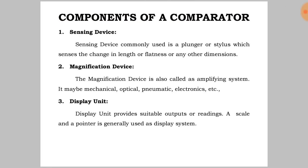The sensing device commonly used is a plunger or stylus which senses the change in length, flatness, or any other dimensions. The magnification device is also called an amplifying system. It may be mechanical, optical, pneumatic, electronics, etc.